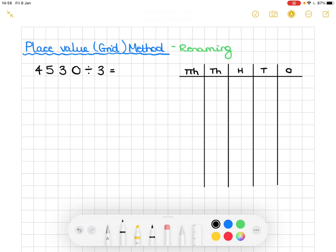Now just to make it clear today, we're going to go one step further, and I'm going to split my place value grid here into 3. And you'll see why in just a moment.